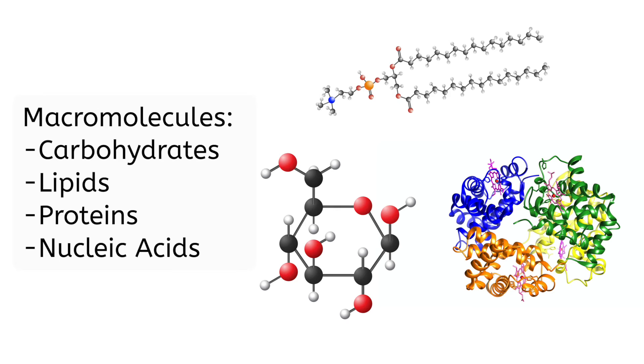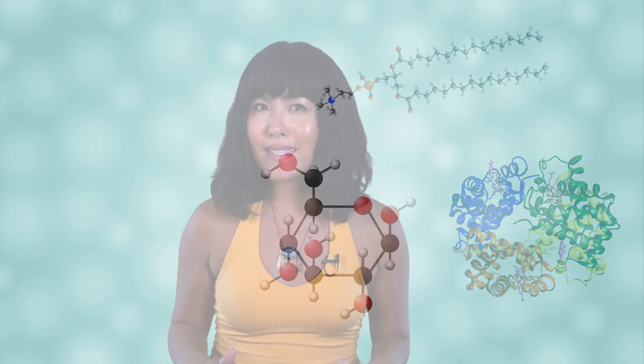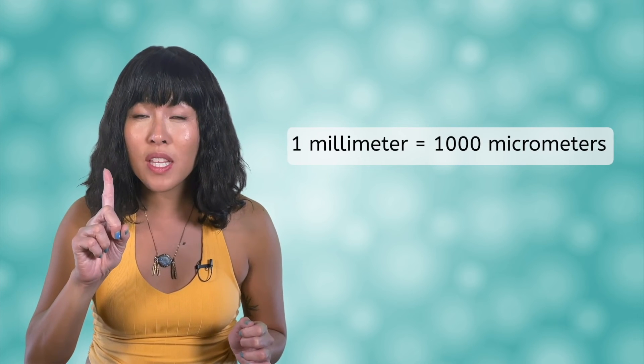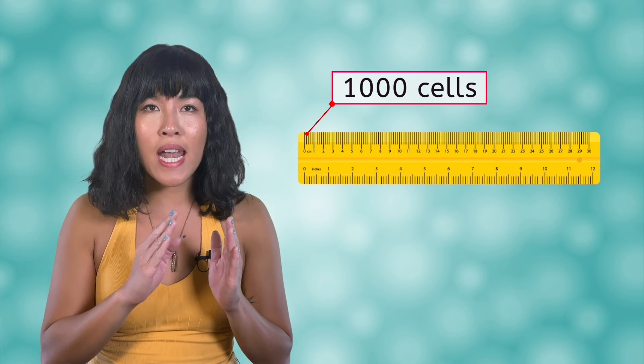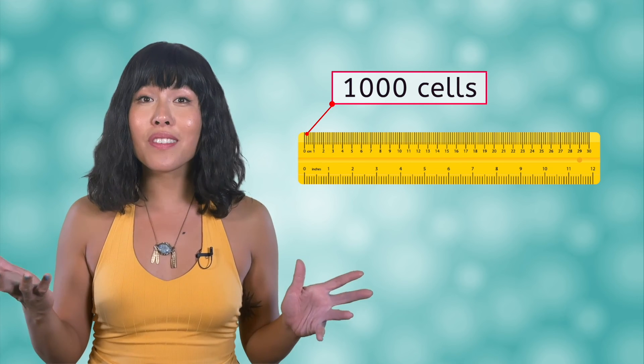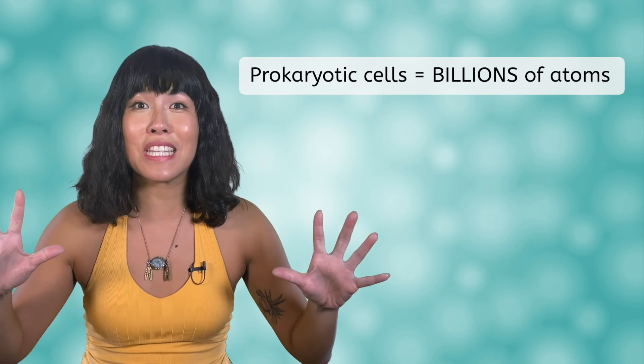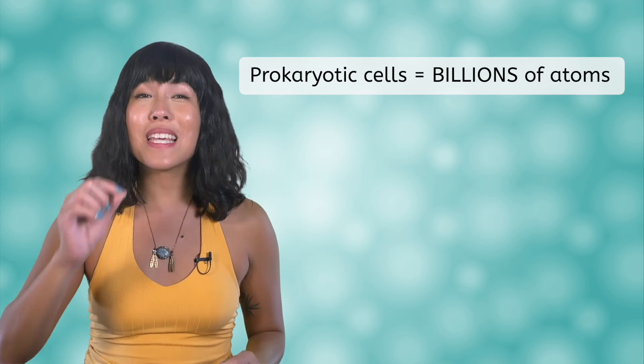Prokaryotic cells are tiny. An average prokaryotic cell measures about one micrometer across — that's one one-thousandth of a millimeter. Imagine taking the tiny lines on a ruler and lining up one thousand cells between each pair. That's why we couldn't see them before microscopes were invented. But even as tiny as they are, prokaryotic cells still contain billions of atoms, because atoms are simply that much smaller.